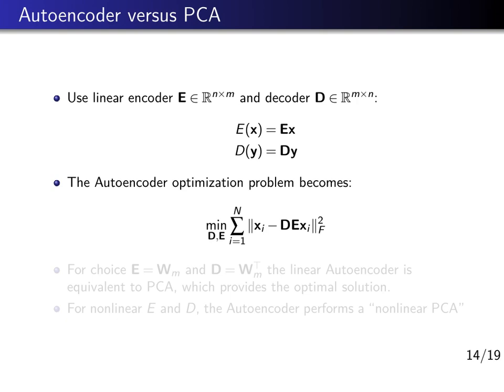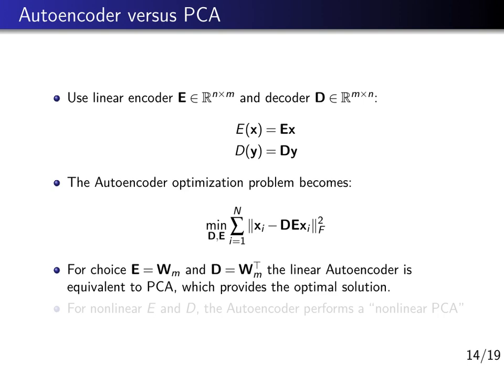This is a very familiar form. If we go back to the PCA result and choose the encoder equal to W_M — the m first principal components of the dataset — and the decoder equal to W_M transposed, then we have the optimal solution. This has been shown for PCA, and the linear autoencoder is then identical to PCA. So if we train an autoencoder with linear encoding and decoding functions and optimize them, we obtain an equivalent result to PCA.